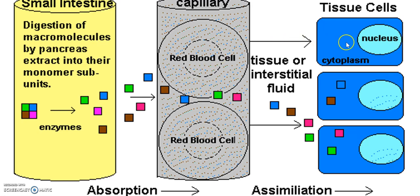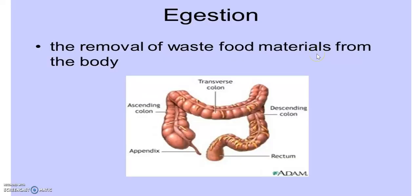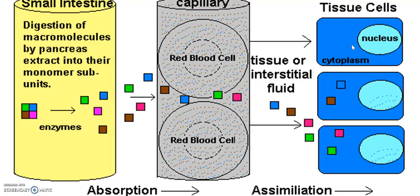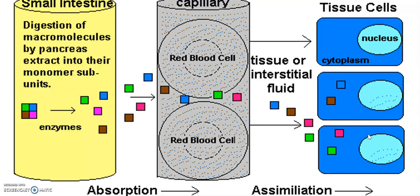Assimilation takes place in each and every cell and occurs in two ways. First, if glucose is present and energy is needed, it will be respired to produce energy and carbon dioxide. Second, the simpler forms of food that have come into the cells will again be changed into complex forms — for example, amino acids will unite to form proteins. Each and every muscle in our body is made up of proteins, and this is how muscles are formed through assimilation after the body receives simpler forms of food.